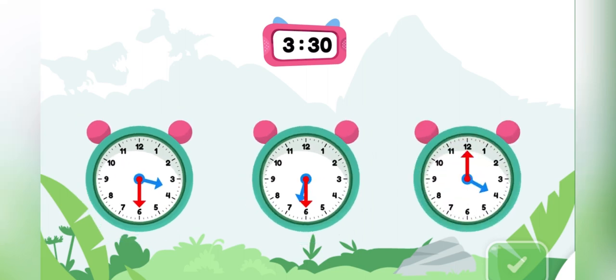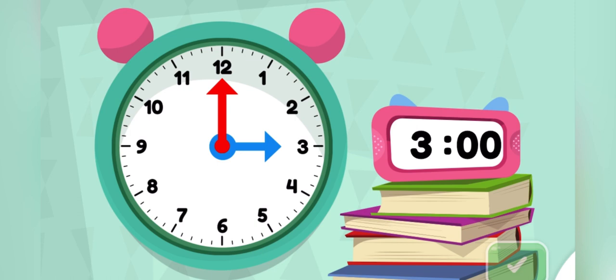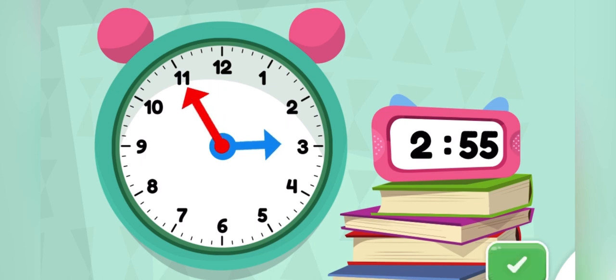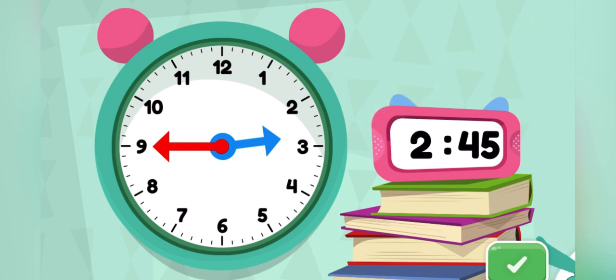Tap the green clock that says the same time as the pink clock. The green clock has to show the same time as the pink clock. Great job! You made the clock show 2.45.